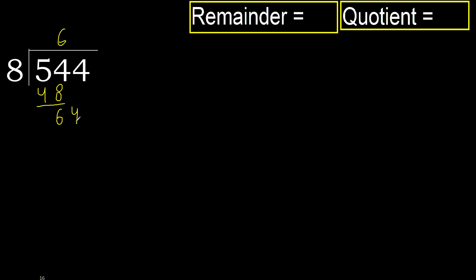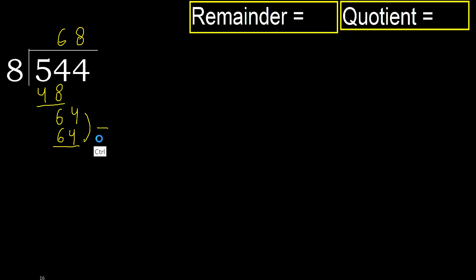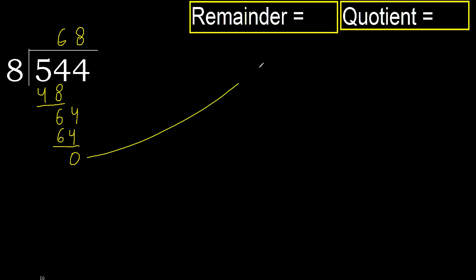Next, bring down 4 to get 64. 8 multiplied by 9 is 72, which is greater. 8 multiplied by 8 is 64, which is not greater. Subtract: 64 minus 64 equals 0. There is no remaining number, therefore finish.